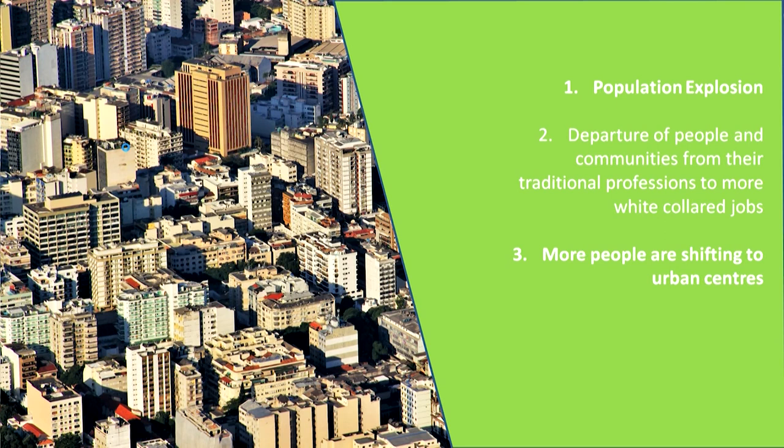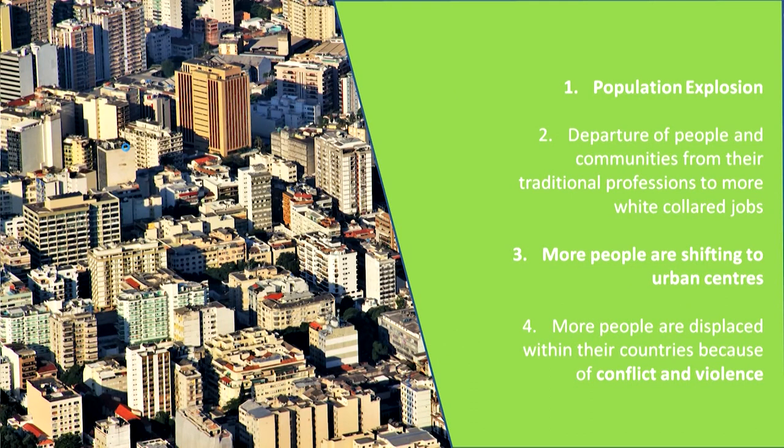The third reason is that there are more people in white collar jobs and people are shifting to urban centers because these urban centers are places where more and more white collar jobs are available. In rural areas such white collar jobs are very less in number. So urban centers are becoming more and more dense — it is anticipated that in time to come almost 70 percent of the world's population will be living in urban areas. And because of this shift more and more people are displaced within their countries because of conflict and violence, largely because of the conflict over availability of resources.